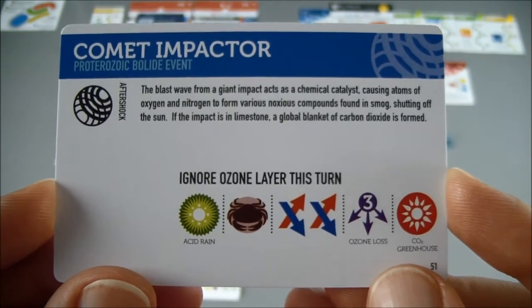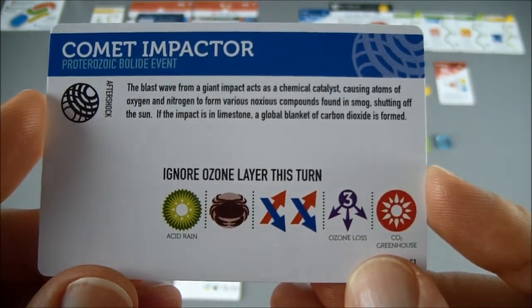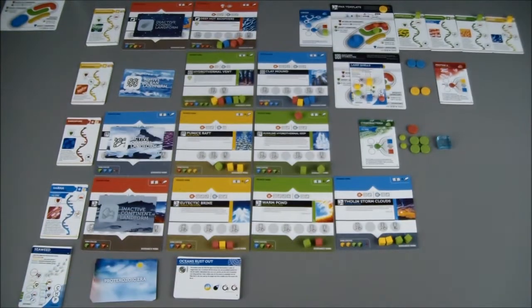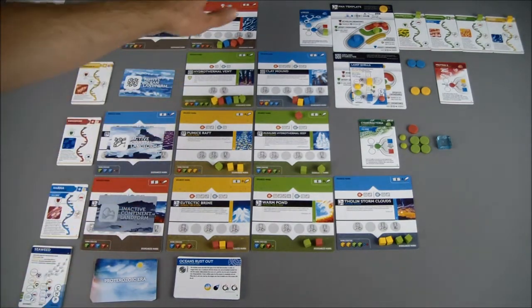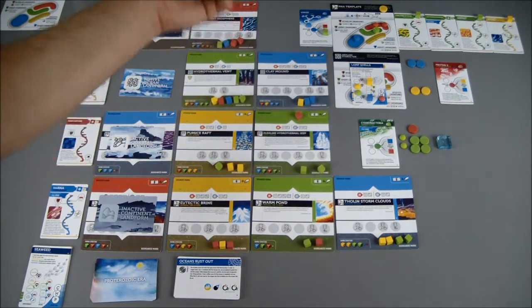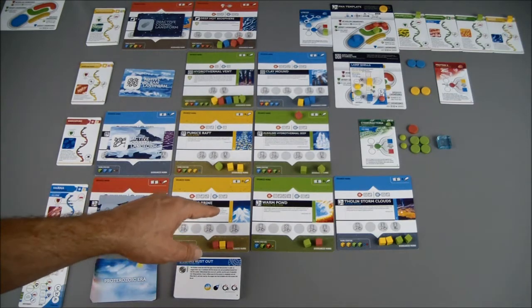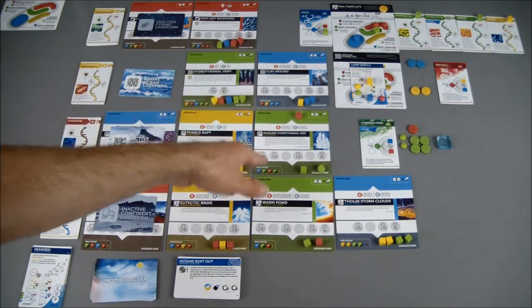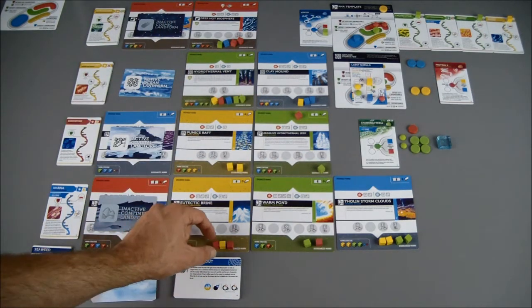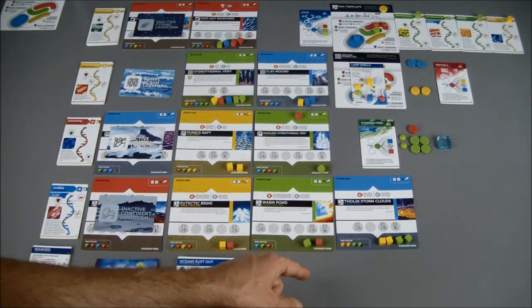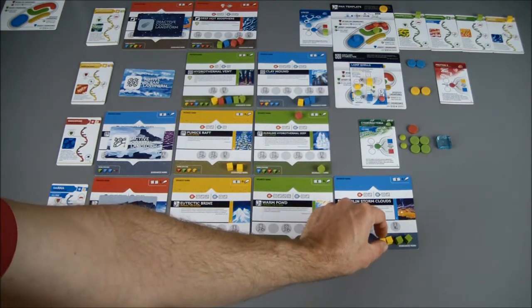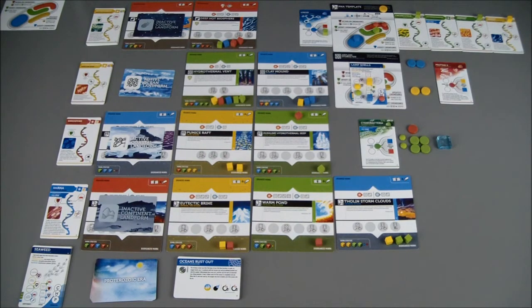Our next card to apply is our common impactor, which was also an aftershock. And we have a smite event caused by acid rain. The depot biosphere is protected, hydrothermal vent is protected, clay mound is not. It just came out and already took some damage. Pumice raft, alkaline hydrothermal seep, the eutectic brine, the warm pond, and the tholin storm clouds. All lose due to smite.